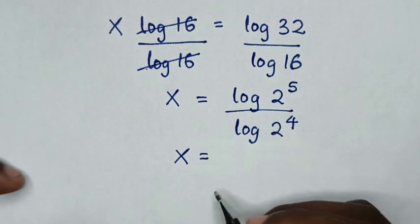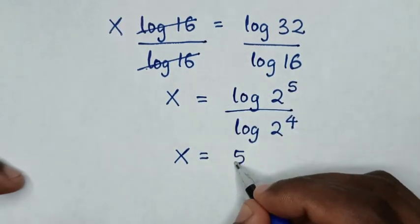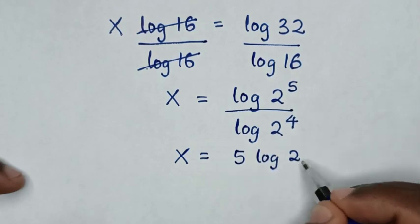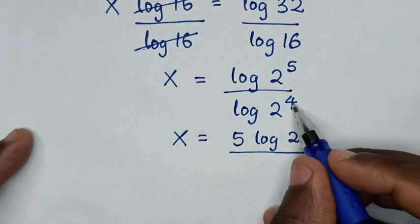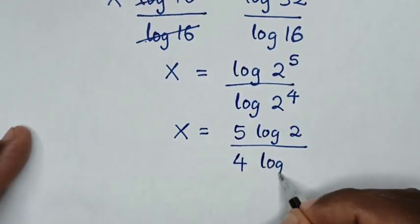Then x will be equal to, from this power of 5 will move to the base, so it will be 5 log of 2 over this power of 4 will move to the base, so it will be 4 log of 2.